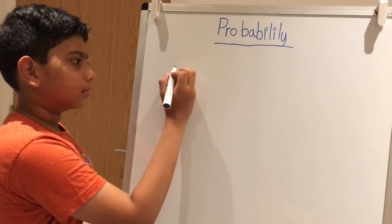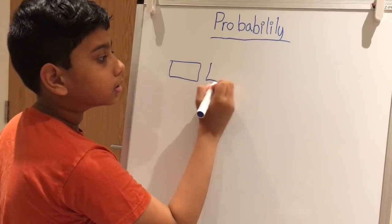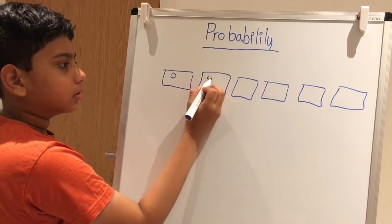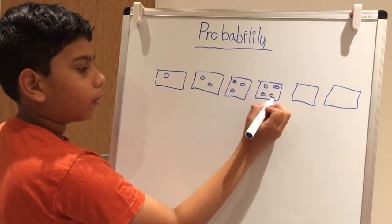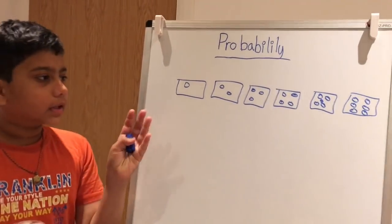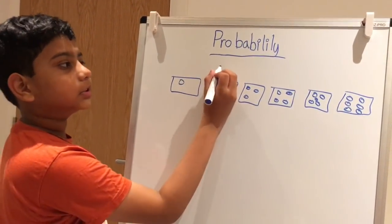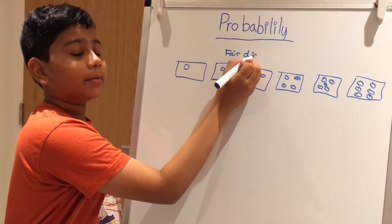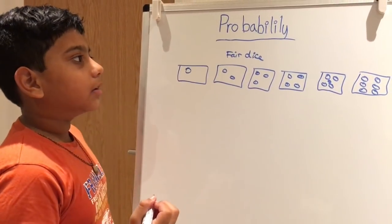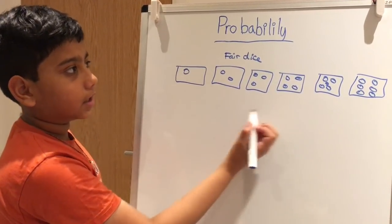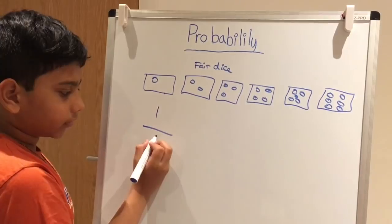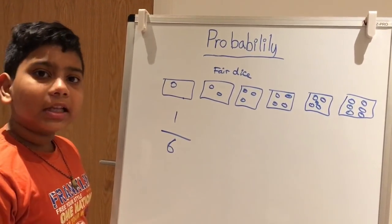Let's try another example using dice. A dice has six sides: one, two, three, four, five, and six. We're using a fair dice, like the ones used in Snakes and Ladders. So the probability of landing on any one of those six sides is one over six.